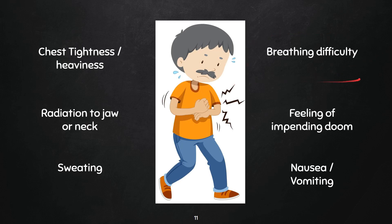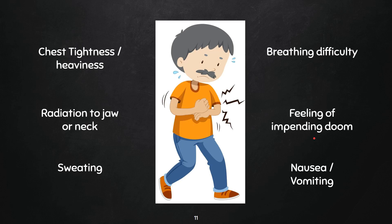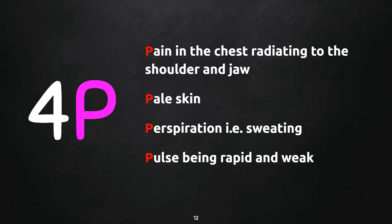A large number of patients experience breathing difficulty, which can sometimes be a sign of a heart attack by itself. Many patients feel they are about to reach their end — a feeling of impending doom. Associated with the pain, because of its severity, is nausea and vomiting; it can sometimes be difficult to differentiate whether acidity or cardiac chest tightness is the cause, which is where investigations come into play. To summarize, the four P's to remember are: Pain radiating to the shoulder and jaw, Pale skin due to dropping blood pressure, Perspiration, and a rapid weak Pulse.